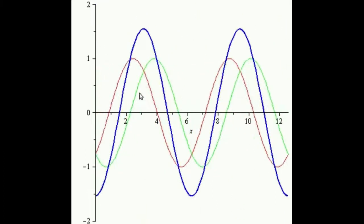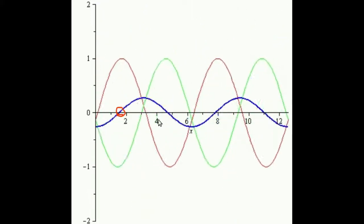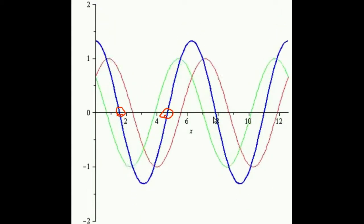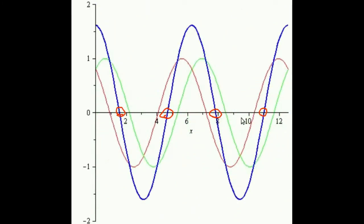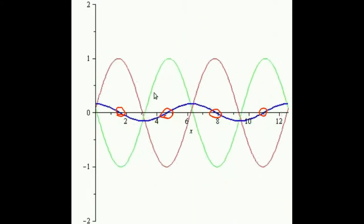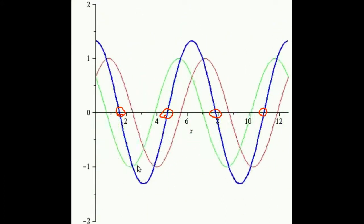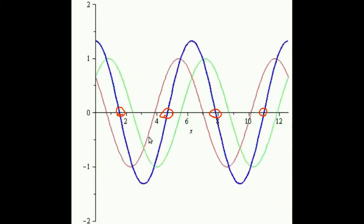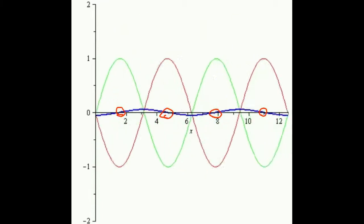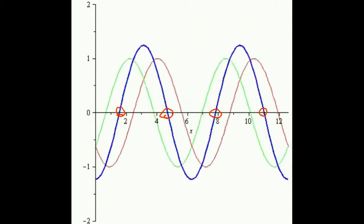You see that we have places here, here, and here, and here, where the medium doesn't move at all. And halfway in between we see places with maximal movement. And this blue wave doesn't seem to be going anywhere. It's just wiggling back and forth. And so this is why we call it a standing wave.